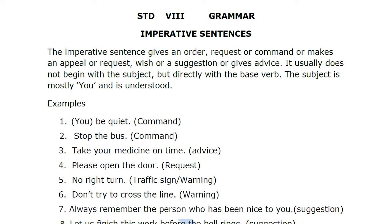Now see the examples. 'Be quiet.' The whole sentence is 'Be quiet.' I've written 'you' in brackets so you know what the subject is. Your sentence always starts with a subject — subject, verb, object. Here the subject 'you' is not given; it's understood. Then you're just giving the command: 'Be quiet.'